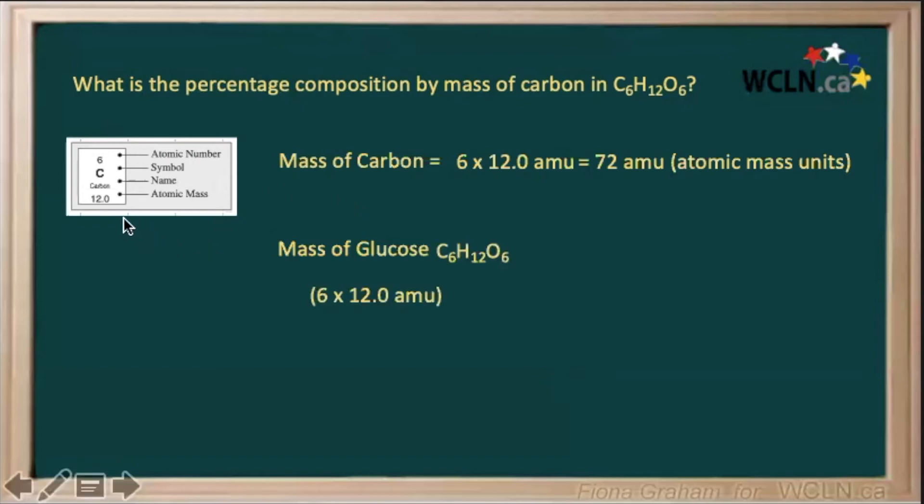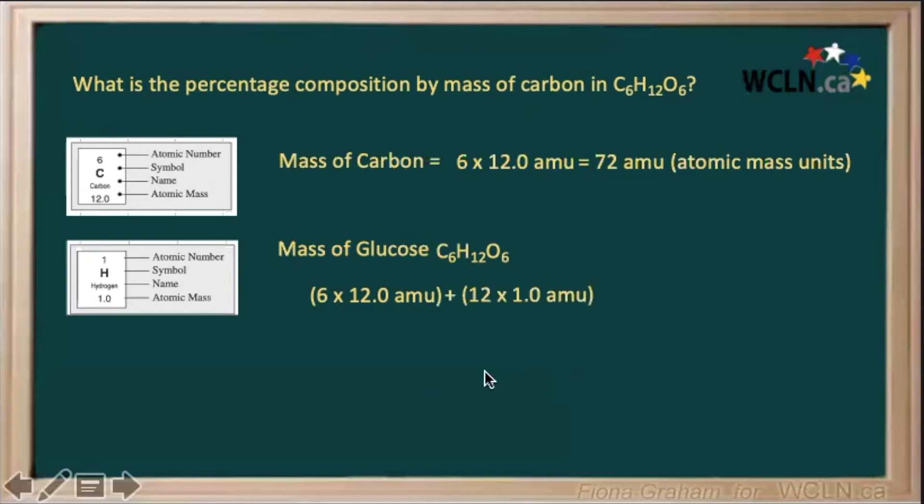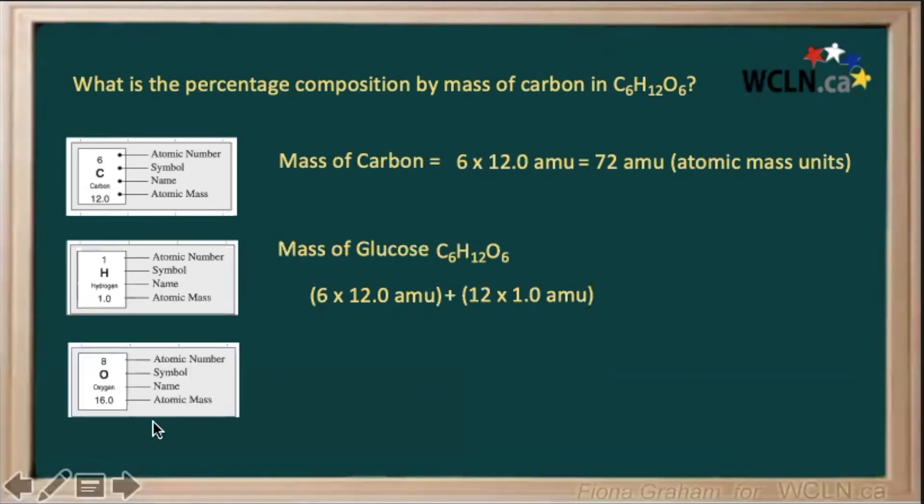We know we have six atoms of carbon with an atomic mass of 12. Our hydrogen has an atomic mass of 1, and we have 12 hydrogen. So 12 times 1 would give us the atomic mass of all of our hydrogen. Oxygen has an atomic mass of 16, and we have six atoms of oxygen. So if we add that all together, we have 180 atomic mass units for our glucose.